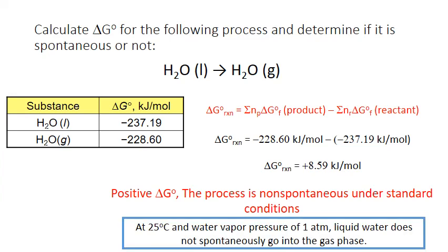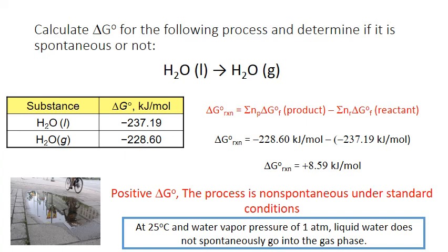So in this situation, standard conditions mean that at 25 degrees Celsius and a partial pressure of one atmosphere for water vapor, water does not spontaneously go from the liquid to the gas phase. Does this fit with our experiences though? We do know that water doesn't go through full-scale boiling at 25 degrees, but is that the only way water can go from liquid to gas? Think about a puddle on the sidewalk — eventually that puddle will dry up.